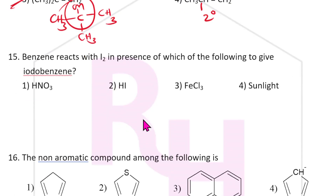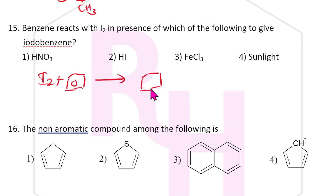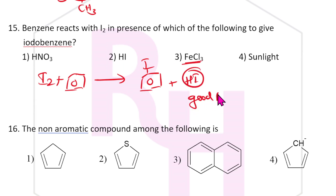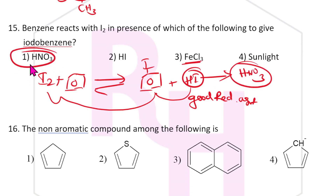Benzene reacts with I2 to give iodobenzene. When I2 reacts with benzene, it forms iodobenzene and HI. But HI is a good reducing agent — it reacts back with iodobenzene forming benzene and I2 again, making it a reversible reaction. To prevent this, HI must be removed using HNO3. So the answer is HNO3.